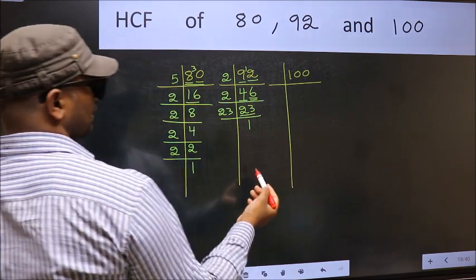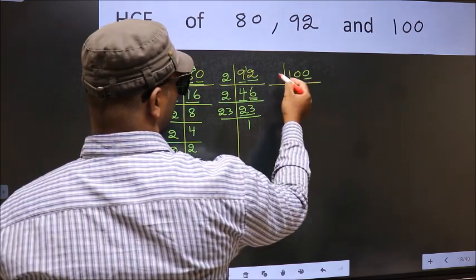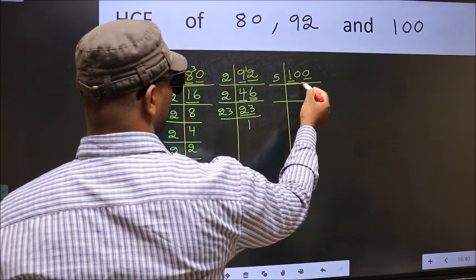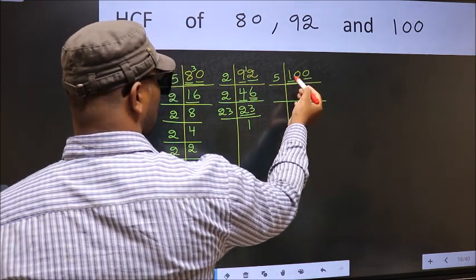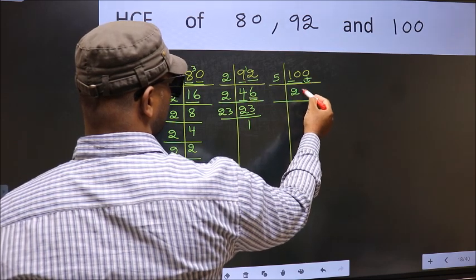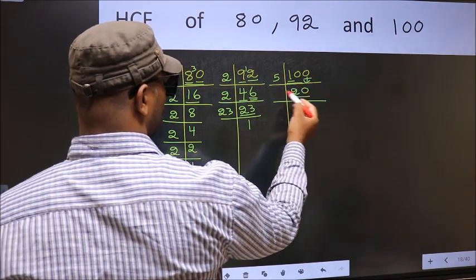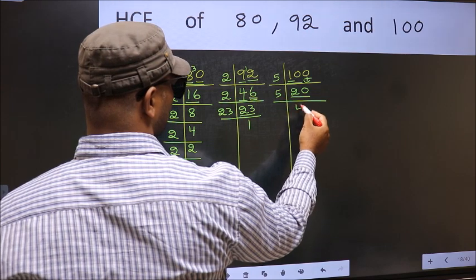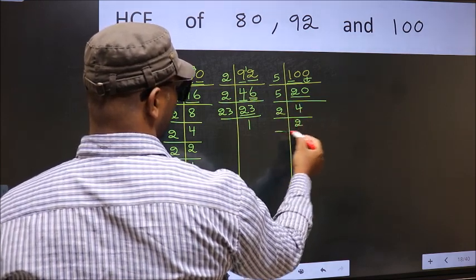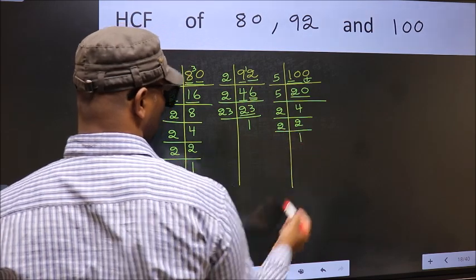Now the other number. Last digit 0 so take 5. First number 1 smaller than 5 so 2 numbers 10. When do we get 10 in 5 table? 5, 2 is 10. This 0 as it is down. Now 20 is 5, 4 is 20. Now 4 is 2, 2 is 4. Now 2, 2 is a prime number so 2, 1 is 2.